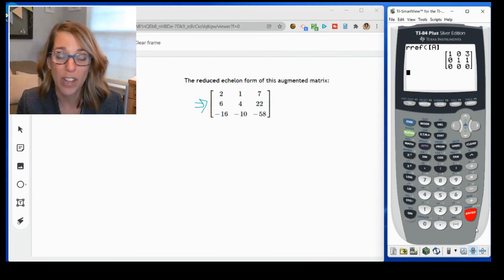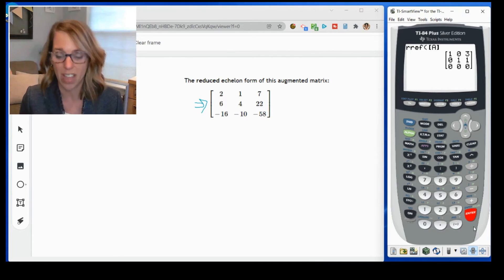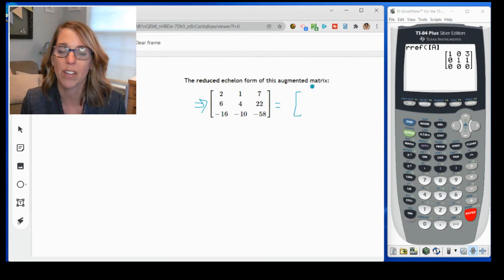This is reduced row echelon form. I've got ones down the diagonals and zeros on the other side of that where that is possible. So the reduced row echelon form, the calculator gave it to me really nicely. 1, 0, 3, 0, 1, 1, and 0, 0, 0.